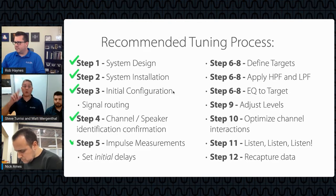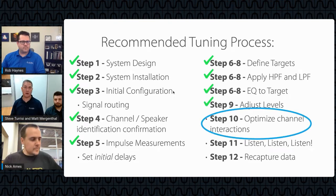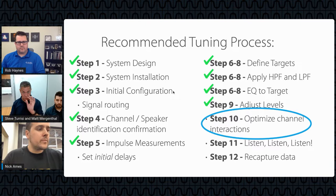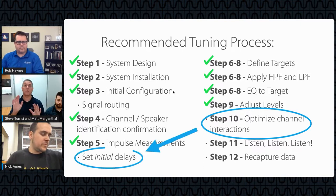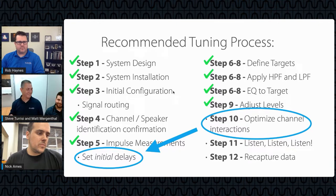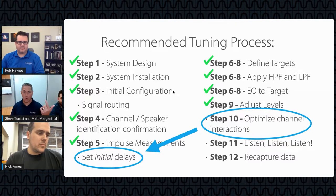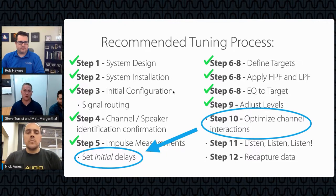We recommend starting with impulse response and setting initial delays, then defining and modifying targets based on measured data, applying high and low pass filters, equalizing to target, matching levels, and then we get to step 10 — which is what we're talking about today — analyzing phase and interactions between channels. We're going to focus on optimizing the channels. To do this, you must have set your initial delays. Without that initial delay, the time aspect of analyzing your channels goes out the window.